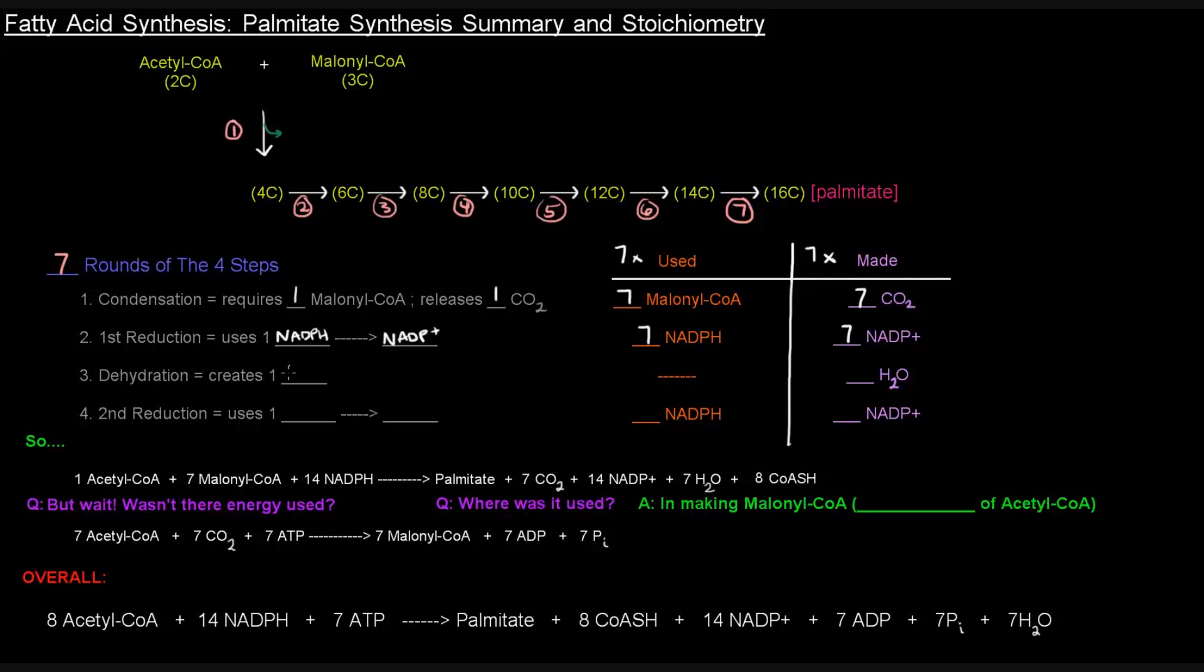So dehydration, that releases or creates one water. That doesn't actually use anything up, right? It takes that H and the OH from the molecule, from the beta-hydroxyacyl ACP. And so nothing else is used, but seven waters are created in seven rounds.